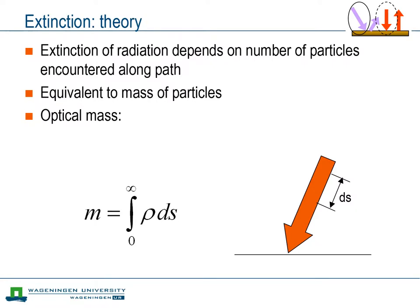Extinction of radiation in the atmosphere is due to both scattering and absorption. For both processes, the effect is dependent on the number of particles encountered by the radiation on its path to the surface. Although the mass of different types of particles will differ, a useful measure for the number of particles is the total mass of air along the path of radiation. This is called the optical mass, which is simply obtained by integrating the density of air along the radiation path.